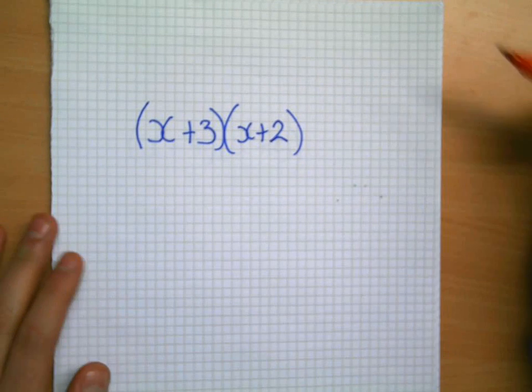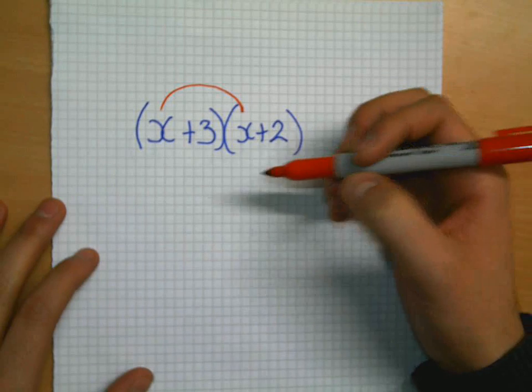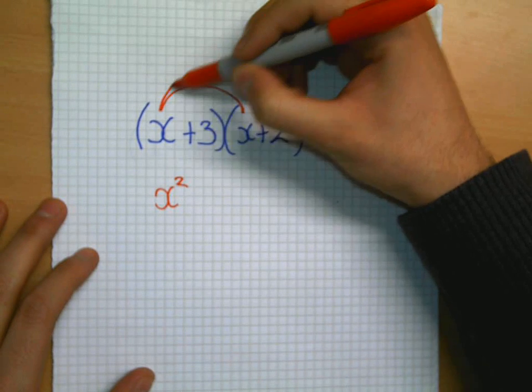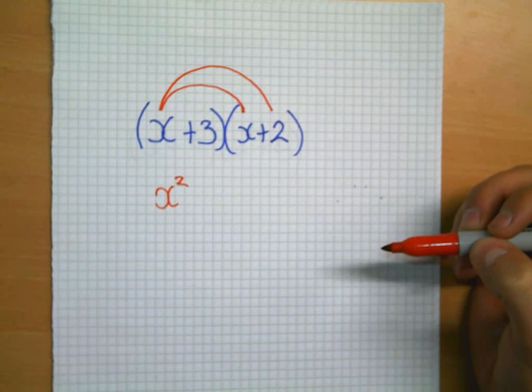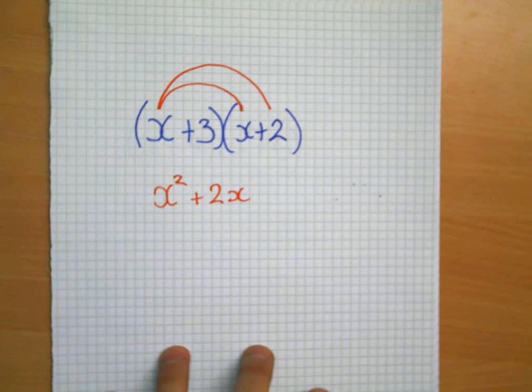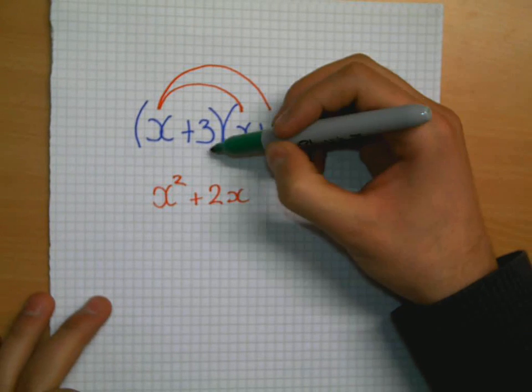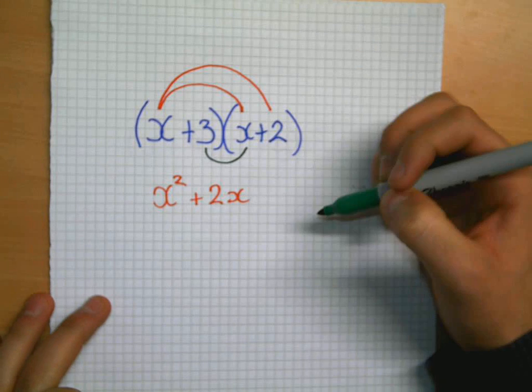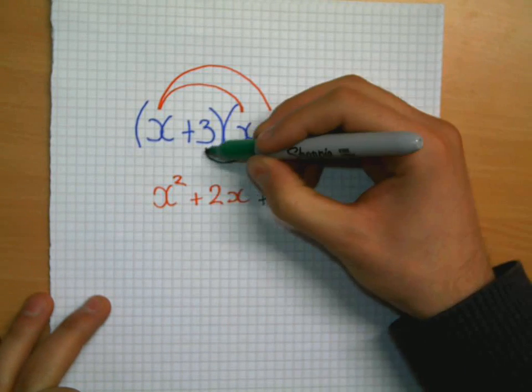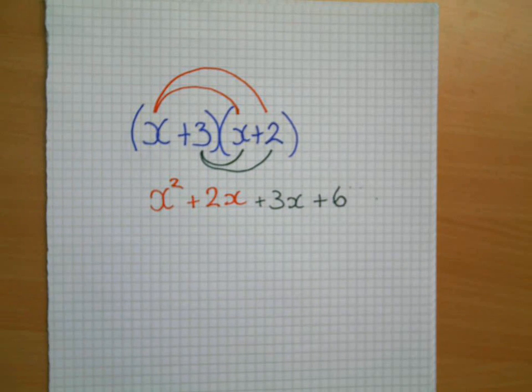So first we're going to take the first term, which is an x, and we're going to multiply it by x. x times by x gives me x squared. Next, x times by 2, that will give me positive 2x. Next, I'm going to take the 3 and multiply it by everything in the other bracket. 3 multiplied by x, that is again positive 3x. And then 3 times by 2 will give me 6.